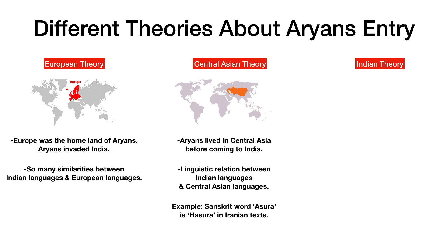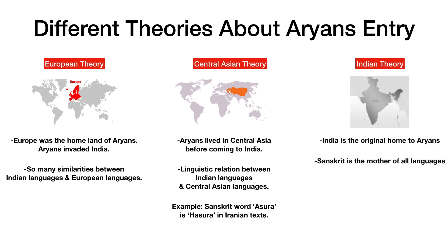For example, the word Asura is pronounced as Hasura in the Central Asian language — the difference is just the letter H. The Indian theory says that Aryans did not come from somewhere else but were the natives of India. This theory also suggests that Sanskrit was the mother of all languages.